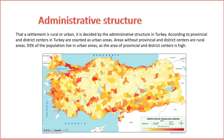3. Special Administrative Structures. Metropolitan and Provincial Special Administration. Some settlements, especially those with special characteristics or historical significance, may fall under metropolitan or provincial special administration. These entities have specific duties and responsibilities tailored to their unique circumstances. The administrative structures of settlements in Turkey reflect a tiered system that addresses the diverse needs of both urban and rural communities, contributing to the functioning and development of settlements across the country.